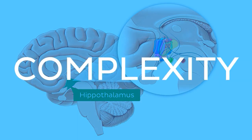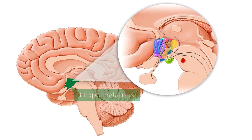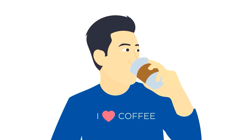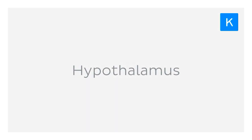Yes, the hypothalamus is going to be one of the trickiest topics for you to learn in your neuroanatomy course, but don't worry — we're Kenhub, which means we love to help. I hope you're adequately caffeinated right now, because you're probably going to need it as we explore the hypothalamus.